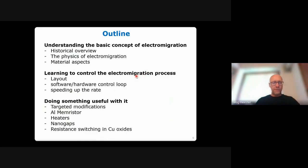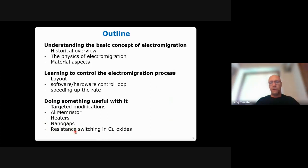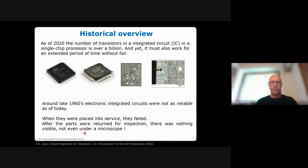The outline is divided into three parts: first, a smooth historical introduction to electromigration presented pedagogically for undergraduate students; second, a short section on how to master this process; and finally, how to do something useful with electromigration — essentially, resistive switching in copper oxide systems, which is the main title of the talk.